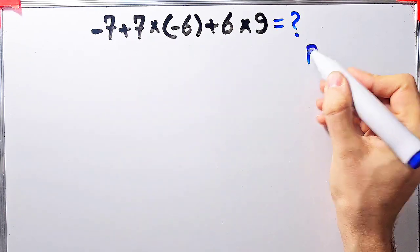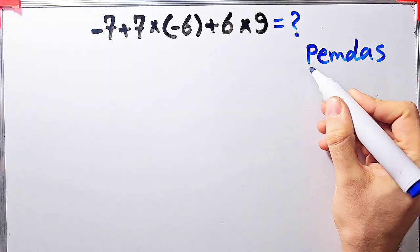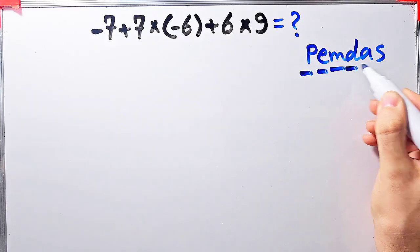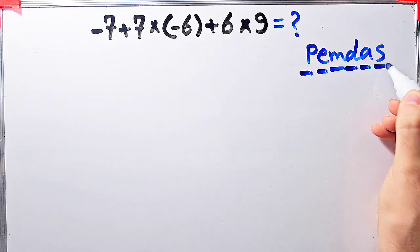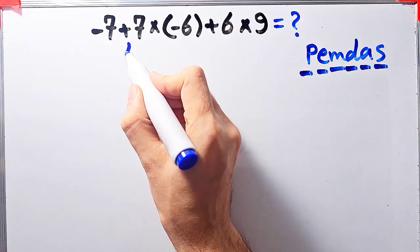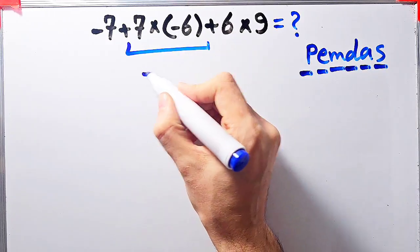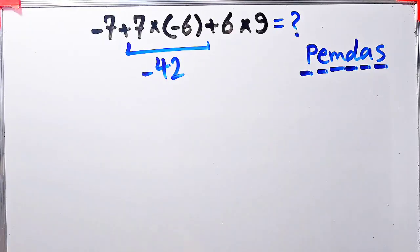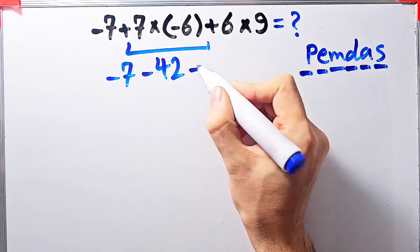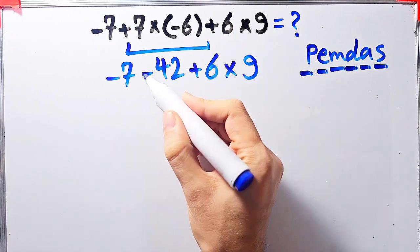Let's solve this step by step. To solve this question we need to follow PEMDAS: parentheses, exponent, multiplication, division, addition, and subtraction. According to PEMDAS, first we simplify the multiplication: 7 times negative 6 equals negative 42. Now the question is negative 7 minus 42 plus 6 times 9.